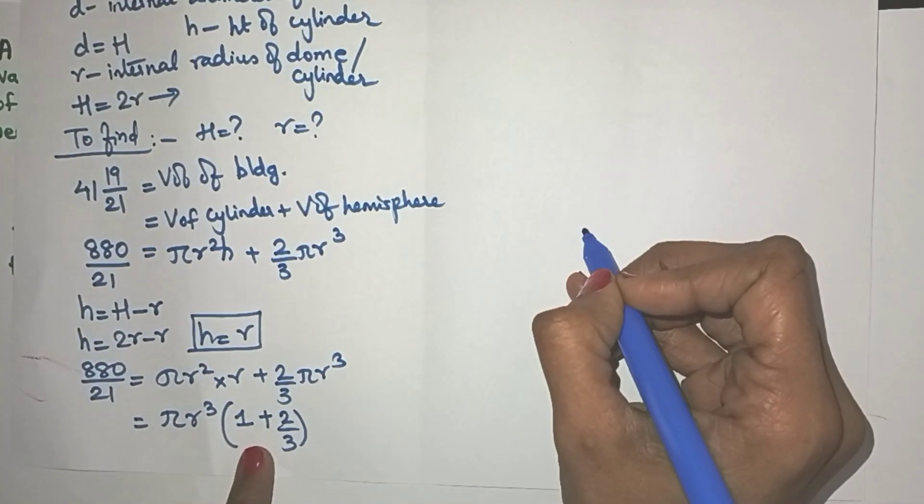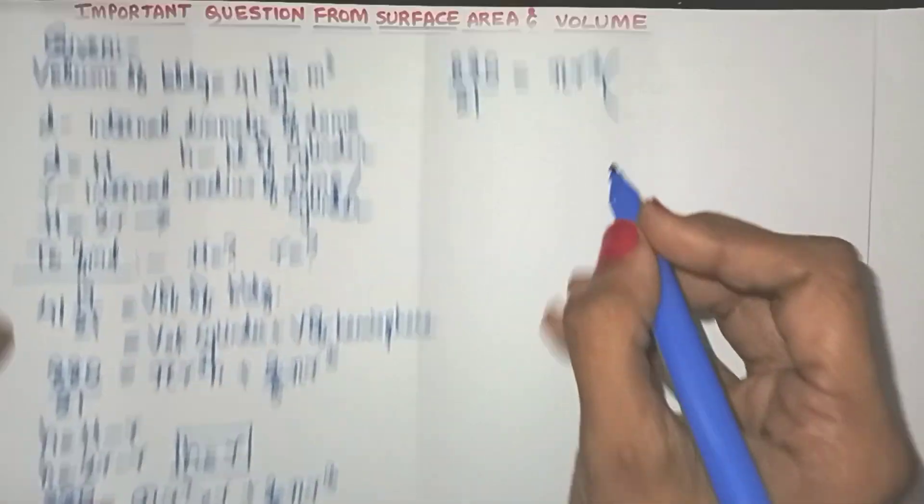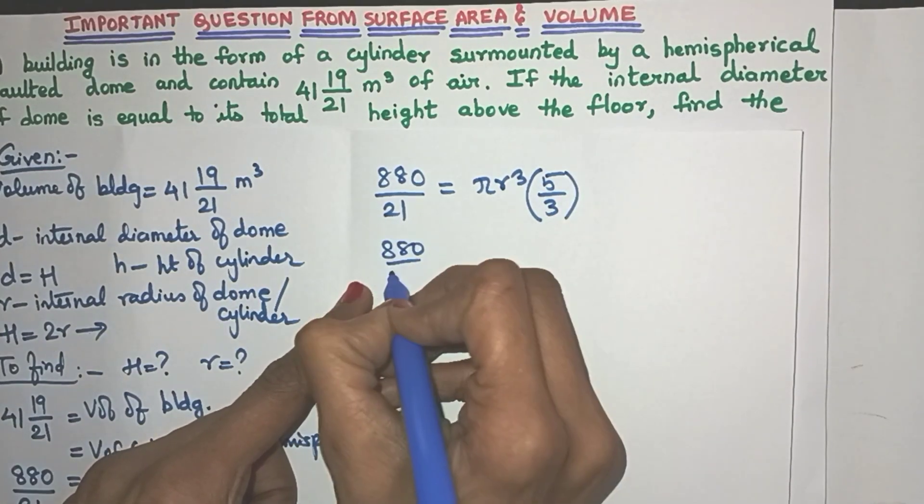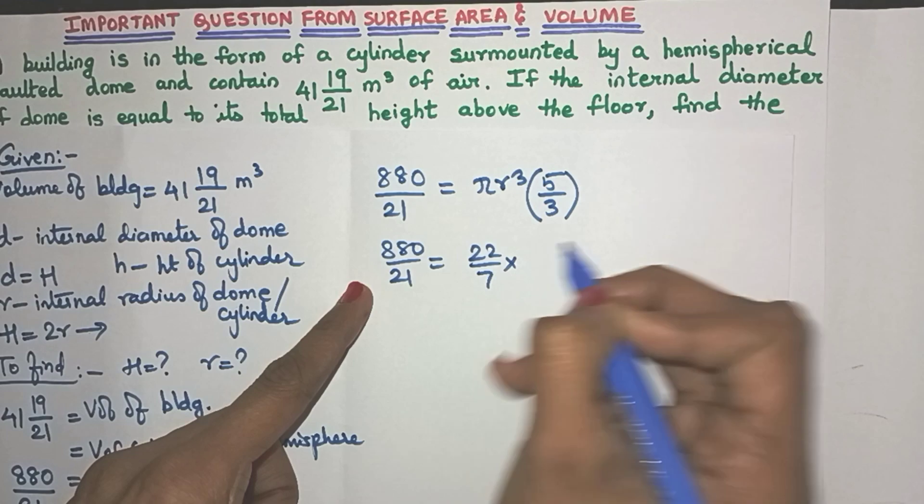It will be 880 by 21 equals to pi R cube. And in bracket friends, we have to take the LCM. So it will be 3 plus 2, which is 5 by 3. Now what we have to do is substitute the value of pi as 22 by 7.